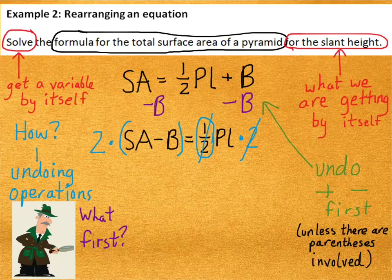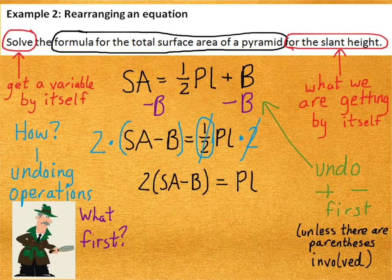Okay? I could distribute the 2 if I want, but, eh, who cares? Alright? So, on the left side, I've got 2 times quantity surface area minus B, and on the right side, I have PL.